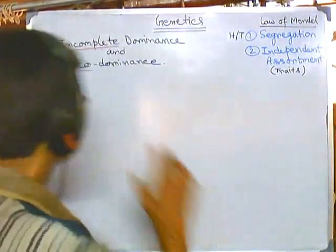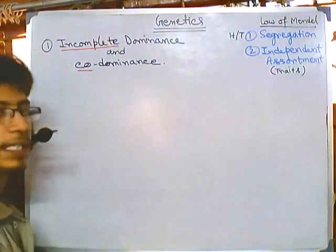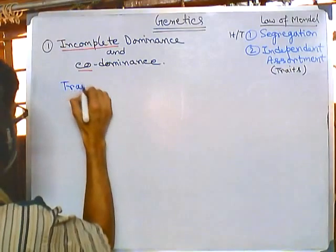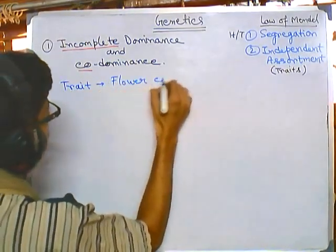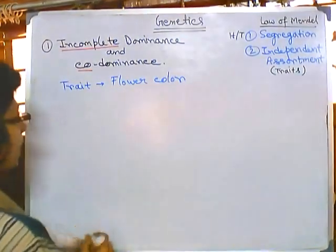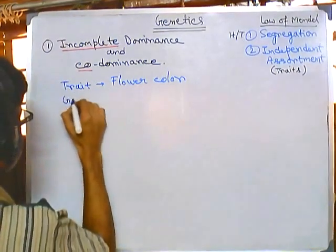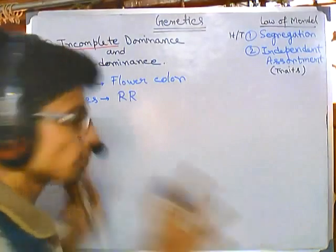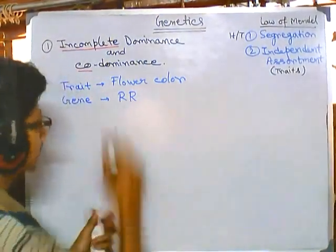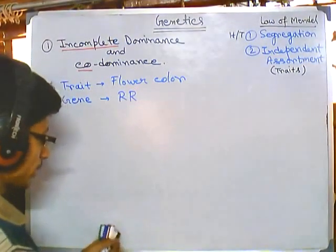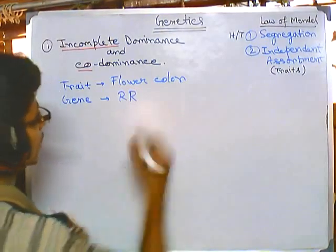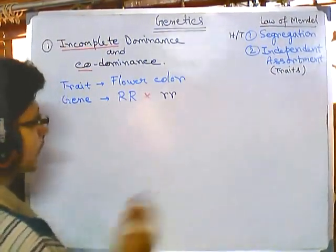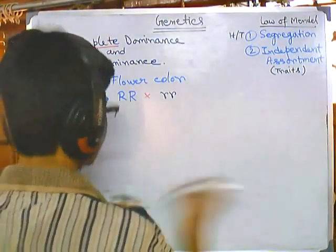Let's consider a single trait — flower color, for example. Flower color is a trait. For flower color, we have one gene with two different alleles: capital R capital R, and small r small r. If we cross between these two parents, according to Gregor Mendel, let us set up a Punnett square.